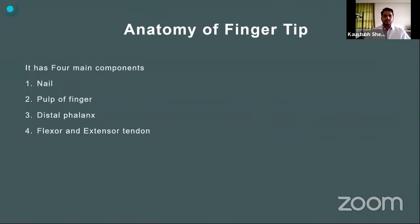Coming to the anatomy of the fingertip, there are four main components we need to know: first is the nail; second is the pulp of the finger; third is the distal phalanx bony part; and fourth is the tendon part — the flexor and extensor tendons. The pulp is a specialized structure with tightly compressed fatty tissue, compartmentalized by strands from the periosteum to the glabrous skin. This glabrous skin is rich in sensory end organs, which is why fingertips are very sensitive to various touch sensations.